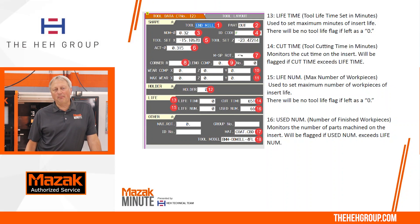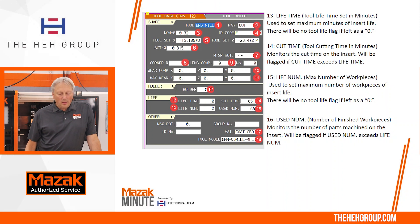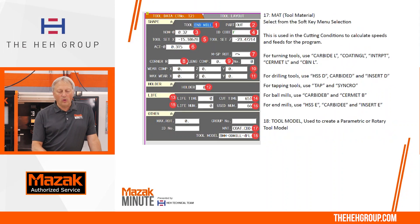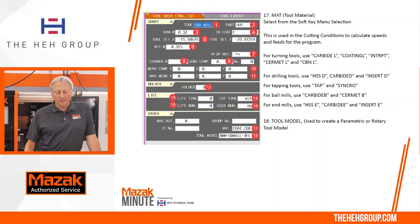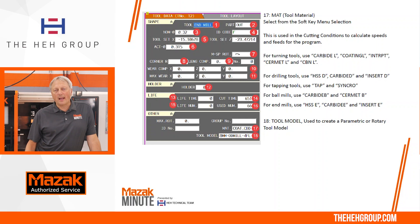Number seventeen is material — that's going to be the type of material of the cutter. You'll see high speed, coated carbide, carbide. Number eighteen is a tool model used for defining tool holders in a 3D model. For cutting materials, drilling tools have high speed drill, carbide drill, insert drill. For tapping: tap and synchronous. For ball mills: carbide ball, cement ball. And for end mills: high speed end mill, carbide end mill, and insert end mill.